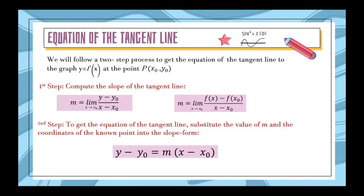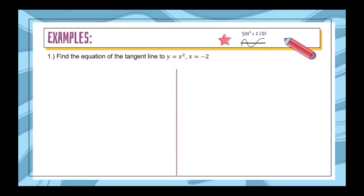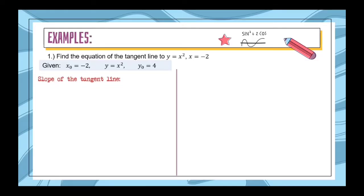So, let's have some examples. The first one is: find the equation of the tangent line to y = x² at x = −2. First, let us find our given values. So x₀ is the same as x, which is −2. And y is x². And y₀ is equal to 4, because if we substitute x = −2 into x², we get (−2)² = 4.